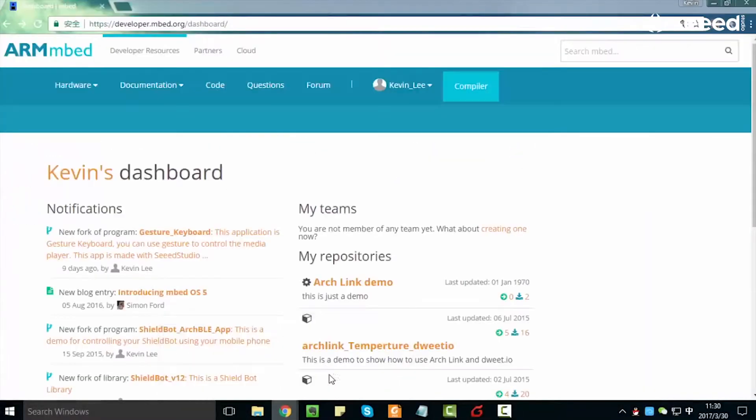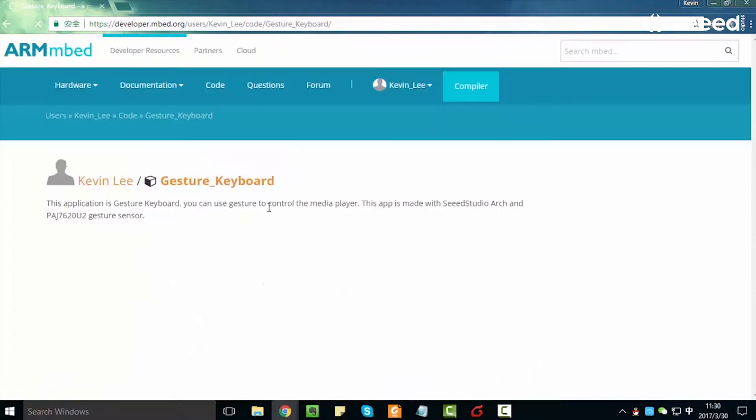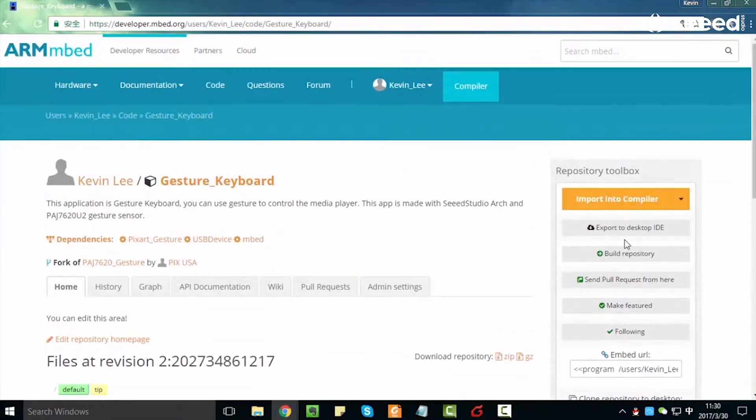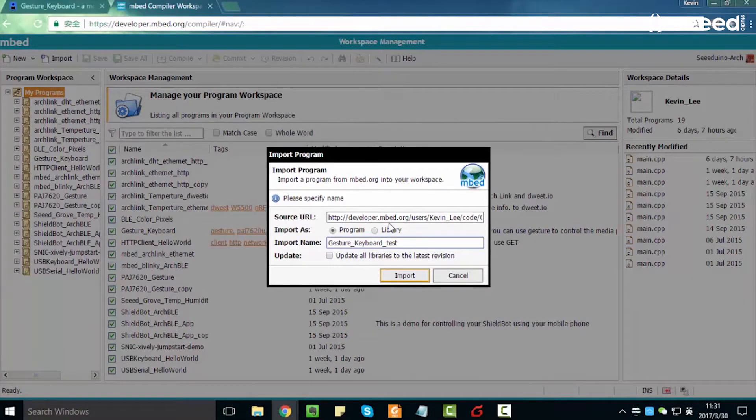So now, I will show you how to deal with the software. First, you should log in or sign up to mbed. They have an online IDE that I like. They also have a downloaded version. And we're going to open up this gesture keyboard. Link is provided below. And import it into our compiler. This will take several seconds. There we go. So you can rename it. We're going to add test to ours. And then we will import.